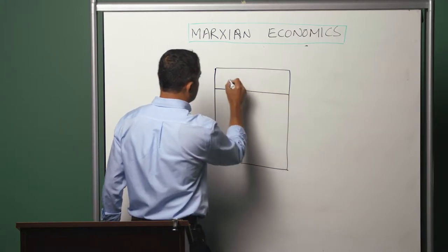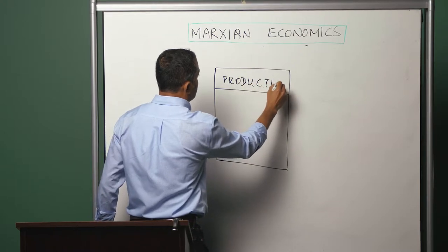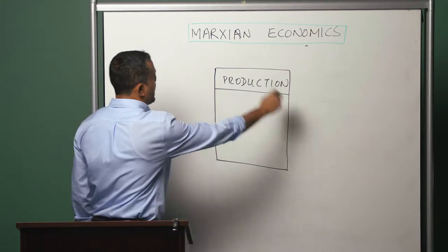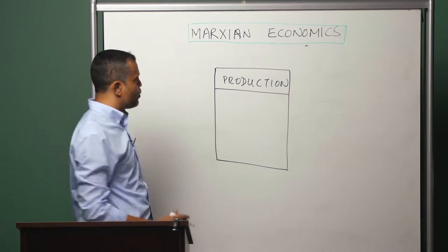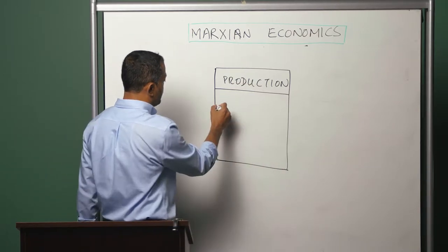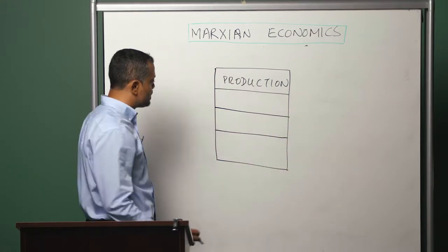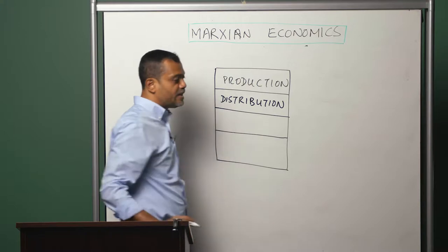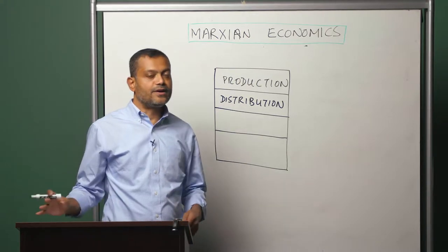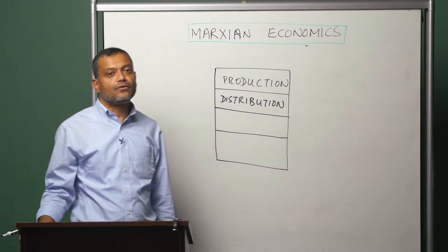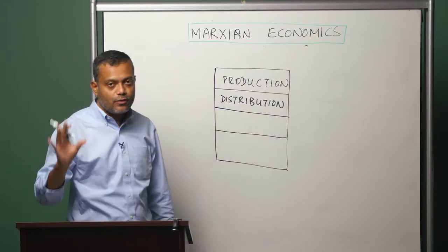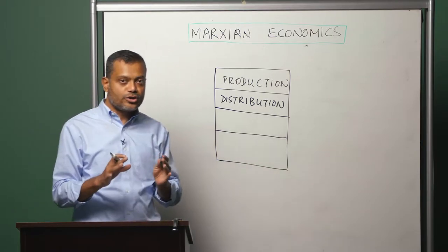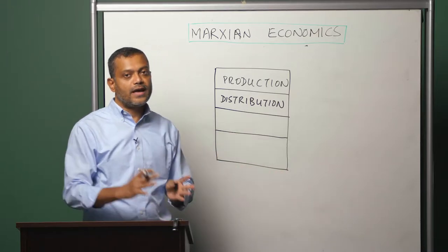The first box is production — activities which create use values on a net basis. Everything else comes under non-production, which we can differentiate into three subcategories. The first is distribution: all activities related to circulation, meaning the transformation of the form of value from money to commodity and from commodity to money. What happens in distribution is merely a transfer of ownership of already existing use values from one economic actor to another.